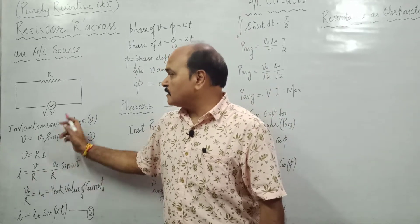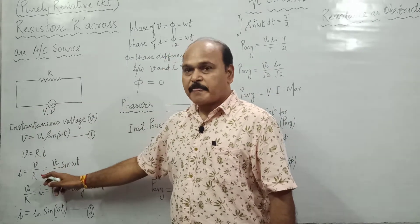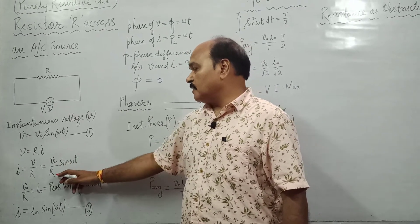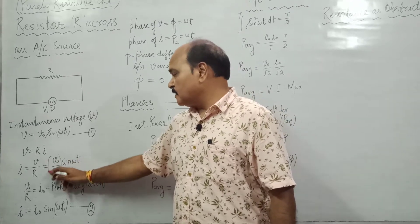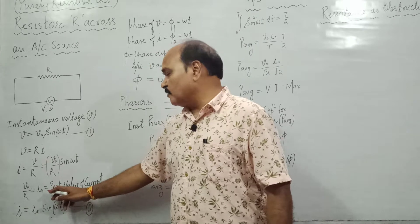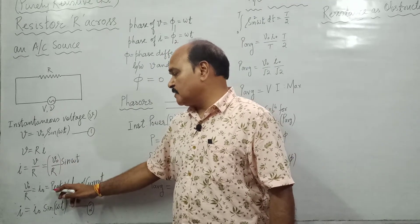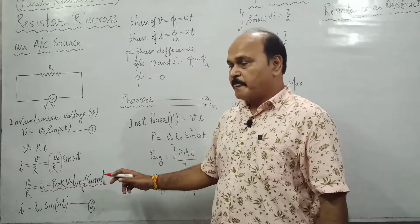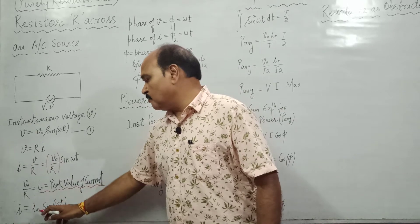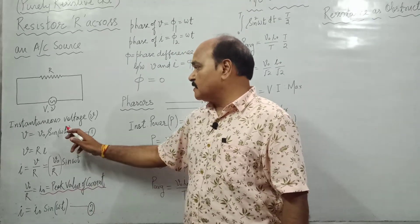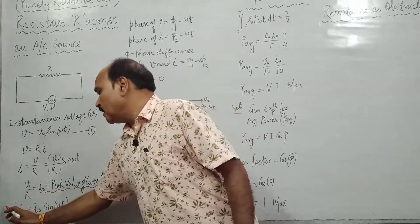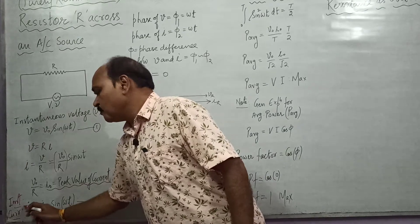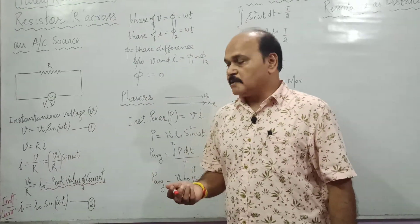Current in the circuit is going to be V upon R. If we substitute the value of V as V₀ sin(ωt) divided by R, then V₀ upon R is I₀ — the maximum value of voltage upon resistance equals the maximum value of current. So the instantaneous current is I = I₀ sin(ωt), across a resistance connected across an AC source.